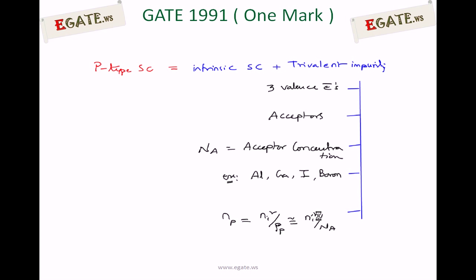Examples of trivalent impurities are aluminium, gallium, indium, and boron. Majority carriers in P-type are holes, approximately equal to acceptor concentration, so PP ≈ Na. Minority carriers can then be calculated using the mass action law.